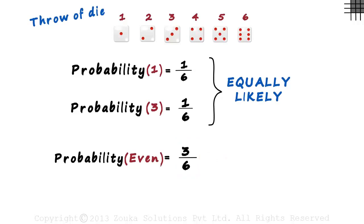Let's see one last question related to a throw of a dice. What will be the probability of getting an odd number? Three outcomes can result in an odd number. 1, 3 or 5.